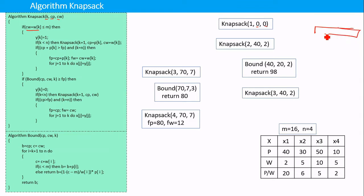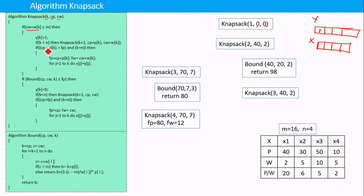We use two arrays, x and y. In the x array we store the final result, and in the y array we store the intermediate result. This item can be added because adding its weight to the current weight is less than the knapsack size, so we set y[k] = 1. Since we haven't observed all items yet, we call the next item — knapsack(k+1) — increasing the current profit and current weight. From knapsack(1, 0, 0) we call knapsack(2, 40, 2), where 40 is the profit of the first item and 2 is its weight.